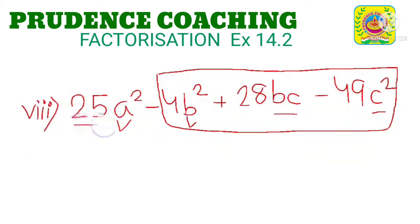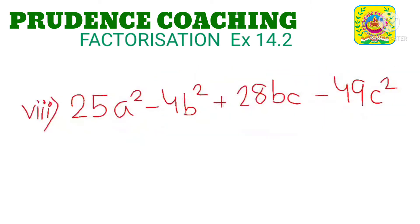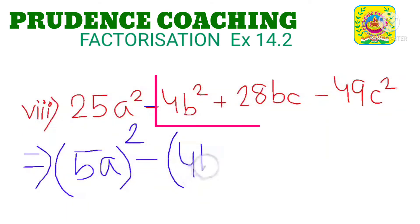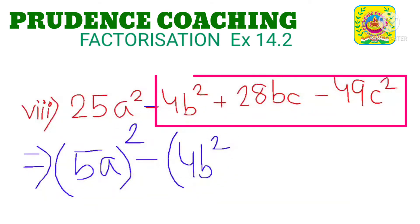As this one is 5 square into a square, let us try to make it. So here this 25a square can be written as 5 square into a square, that is 5a the whole square. Now if we take this minus common, then this 4b square will be there.